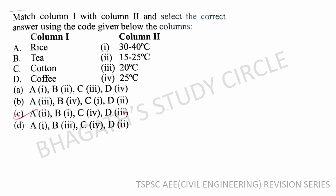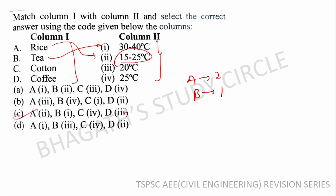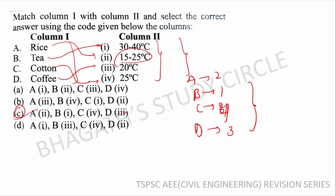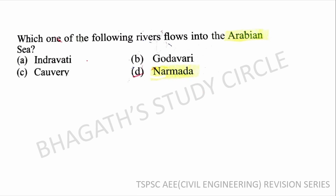Next question: Match Column 1 crops with Column 2 temperature ranges. Rice optimum temperature is 15 to 25 degrees. Cotton requires 25 degrees. Coffee requires around 20 degrees. Option C is the correct answer.